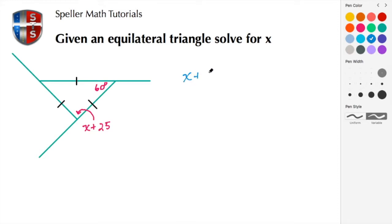X plus 25 is equal to 60. Now we just have a basic algebra equation. We're going to subtract 25 from both sides, and doing so we just leave X on the left hand side. We're going to do our regrouping here, make that 0 with 10, 10 minus 5 is 5, and 5 minus 2 is 3.